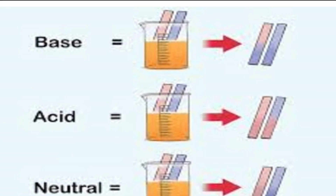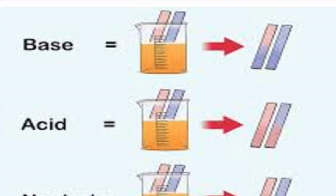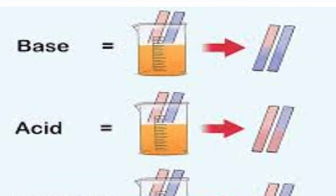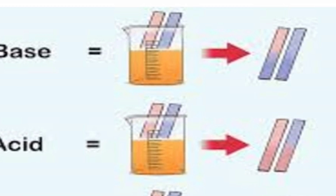In acid, blue litmus turns red. Red litmus shows no change in acid. In neutral, red litmus paper shows no change. To identify a base, use red litmus. To identify an acid, use blue litmus. Blue litmus in base shows no change in color; red litmus in neutral also shows no change.